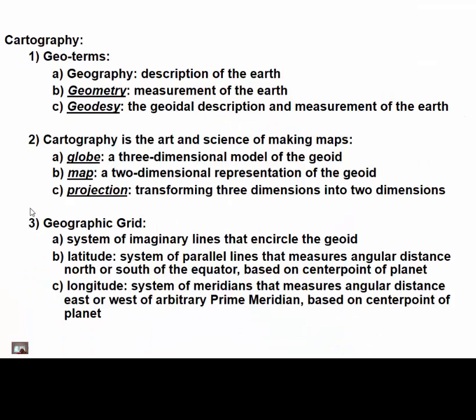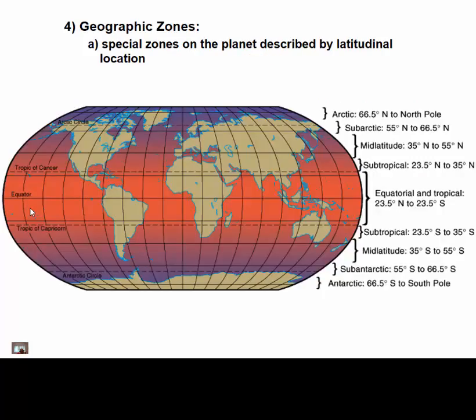We have other related terms: geography, geometry, and geodesy. Cartography is the art and science of making maps — we can look at what constitutes the art part versus the science part, such as what colors to use. There's science that addresses that. And then the geographic grid helps us measure our absolute location.